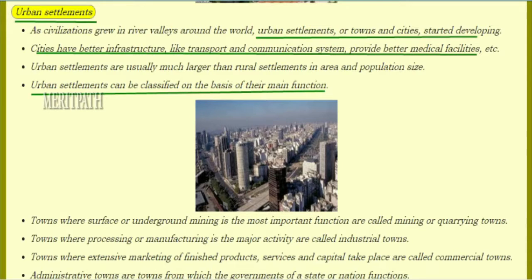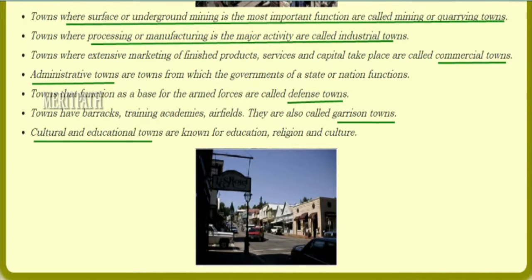Urban settlements developed as population grew in river valleys and around the world, with people settling in towns or cities. Towns where mining or quarrying is the important function are known as mining towns. Towns where processing or manufacturing is the major activity are industrial towns. Towns with extensive marketing are commercial towns. Administrative towns are those from which governments or nations function. Defense or garrison towns function as bases for armed forces, with barracks, training academies, and airfields. Cultural and educational towns are known for education and religion.